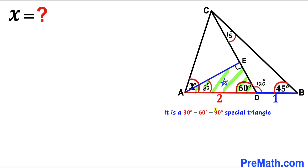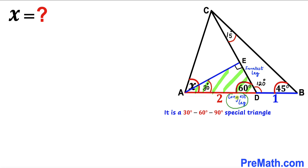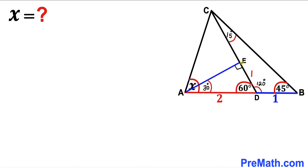Triangle AED is a 30-60-90 special triangle. The 30-degree angle is the smallest and the 90-degree angle is the largest, so AD is the longest leg (hypotenuse) and ED is the smallest leg. In a 30-60-90 triangle the longest leg is twice the smallest leg, so if AD is 2 units then ED must be 1 unit. Since BD is also 1 unit, we have ED = BD = 1.